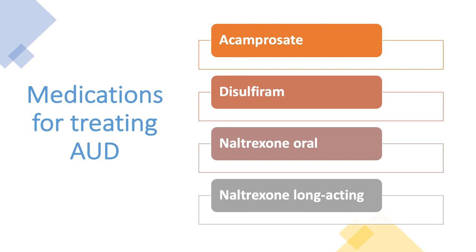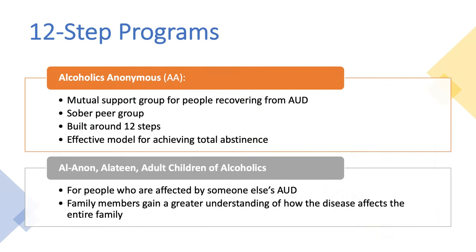Only 1.6% of the estimated 14.1 million adults with past-year alcohol use disorder — that's only 223,000 of 14 million people — use medications for treating AUD, according to 2019 data. Another path to recovery is available from Alcoholics Anonymous, a self-help group for people recovering from AUD that offers a sober peer group built around 12 steps as an effective model for achieving total abstinence.